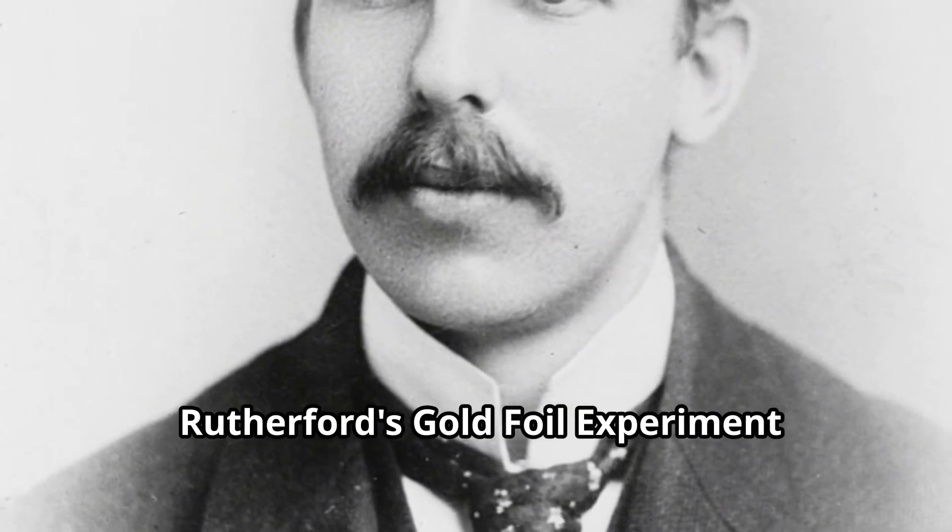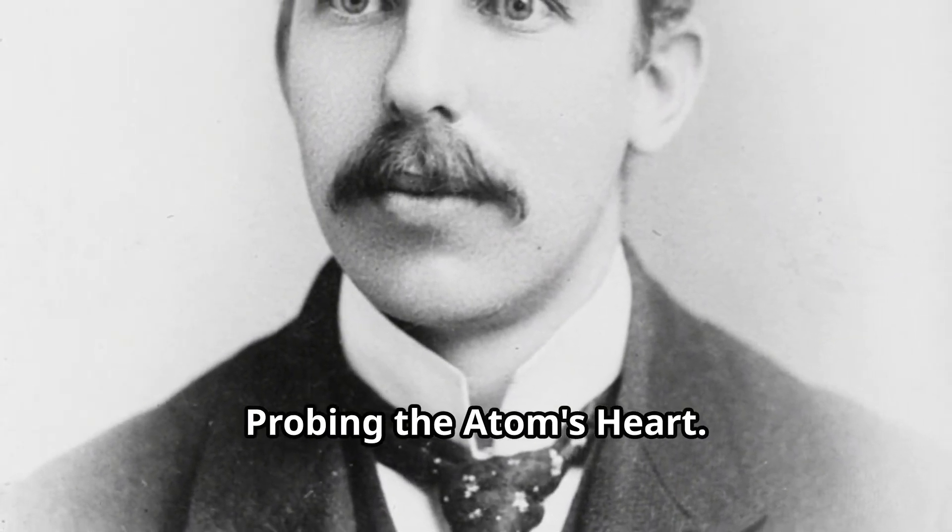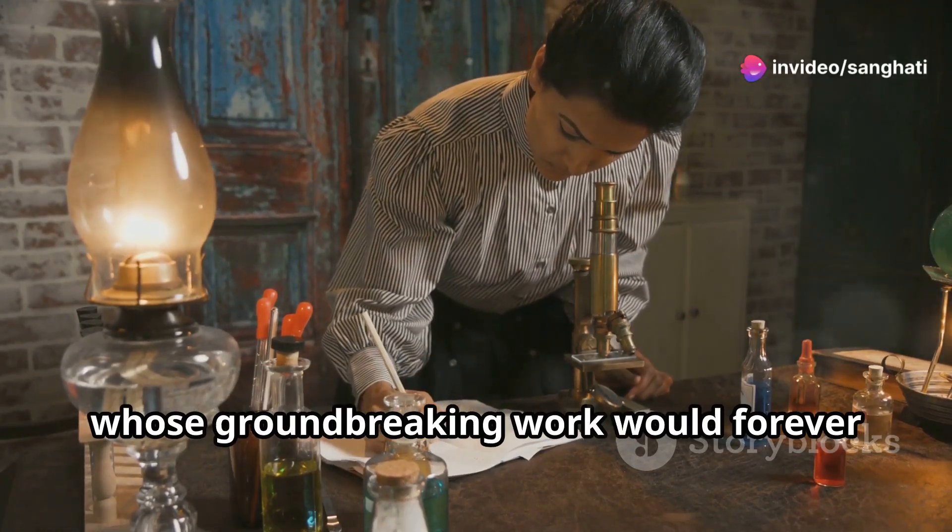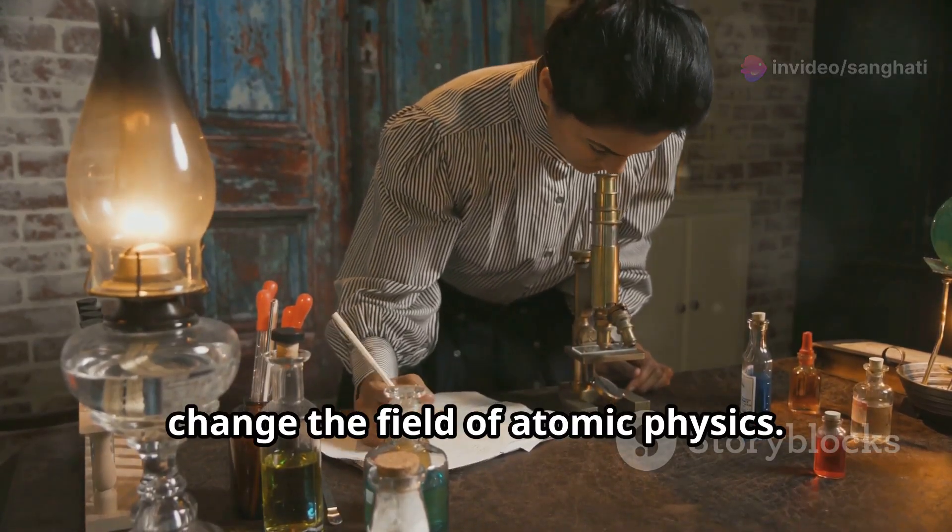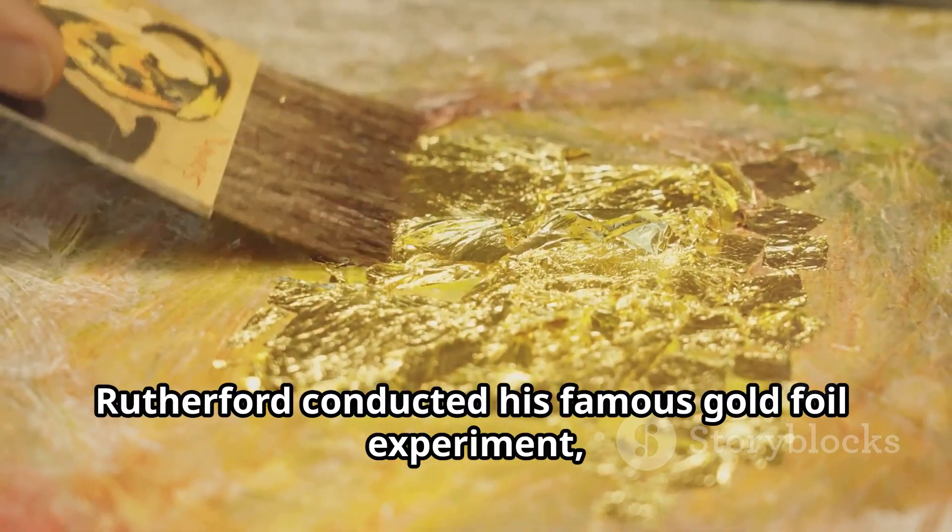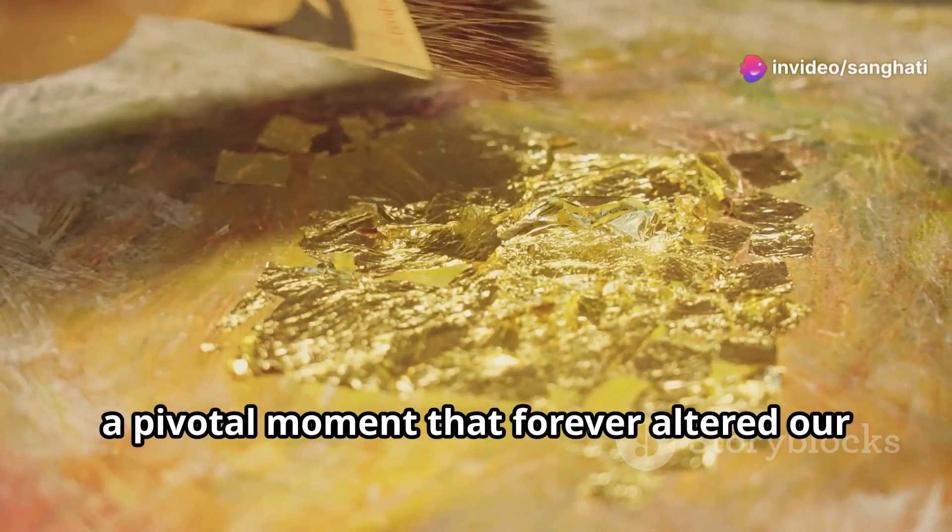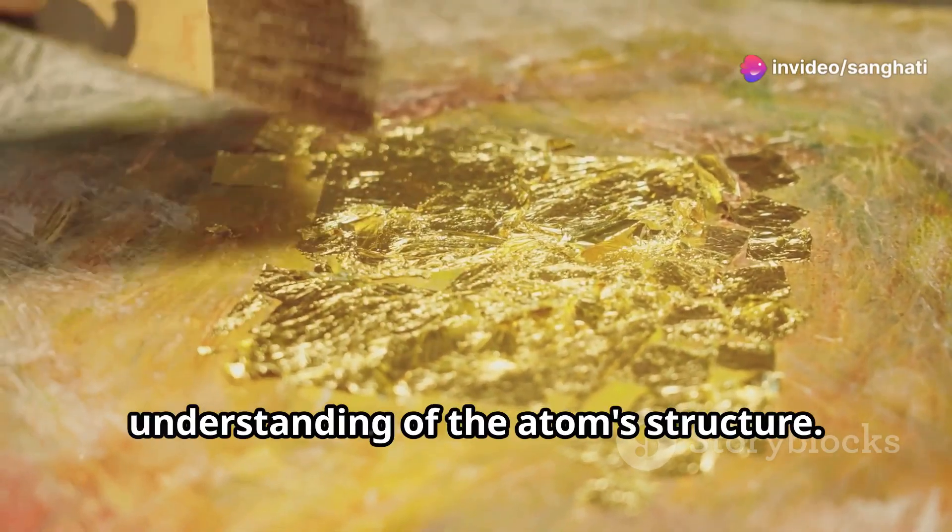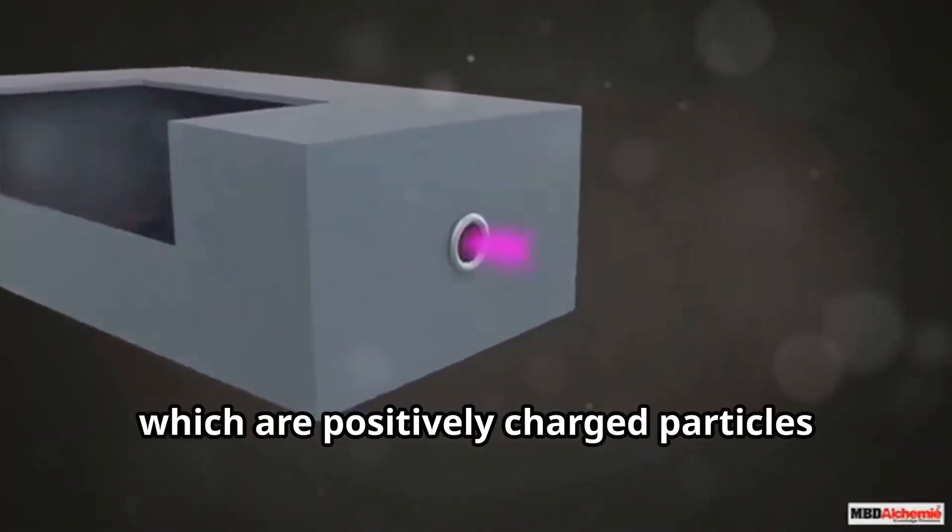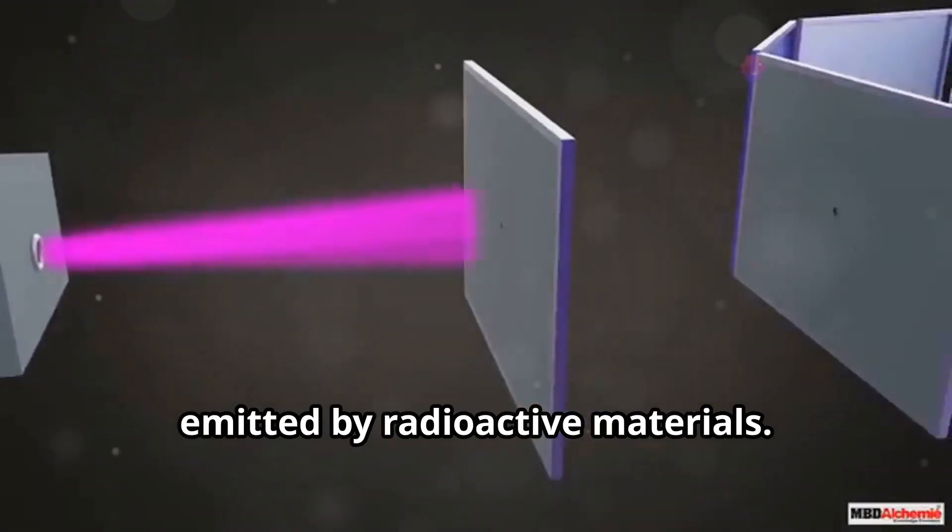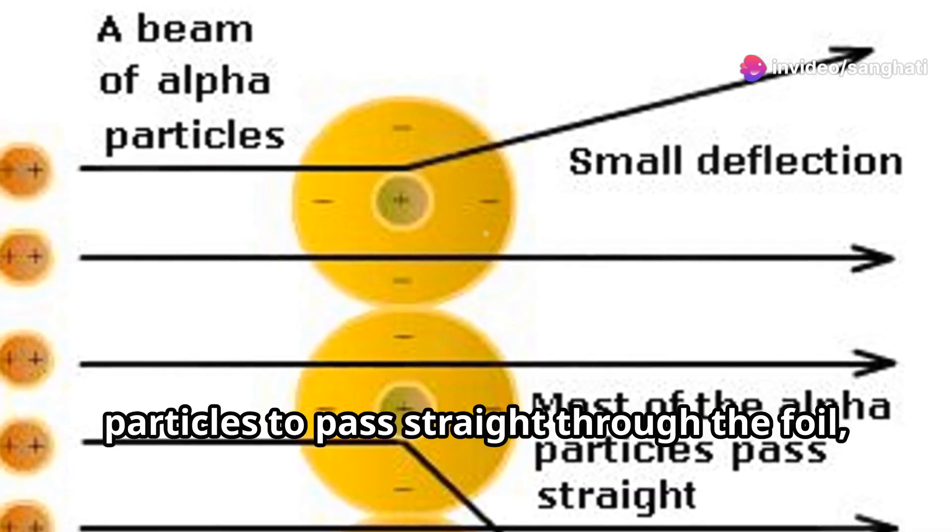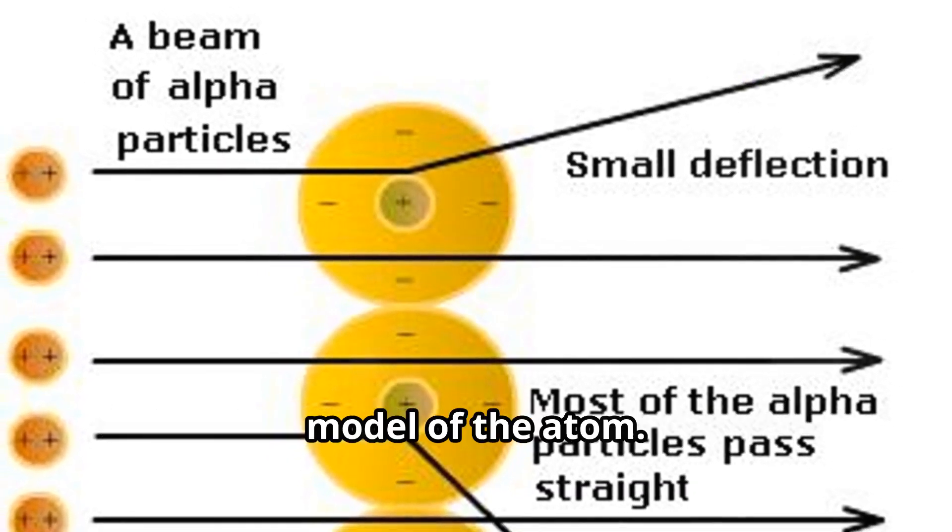Rutherford's Gold Foil Experiment: Probing the Atom's Heart. Ernest Rutherford, a New Zealand-born physicist whose groundbreaking work would forever change the field of atomic physics. In 1917, Rutherford conducted his famous gold foil experiment, a pivotal moment that forever altered our understanding of the atom's structure. He bombarded a thin sheet of gold foil with alpha particles, which are positively charged particles emitted by radioactive materials.